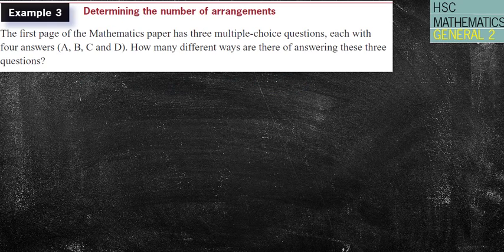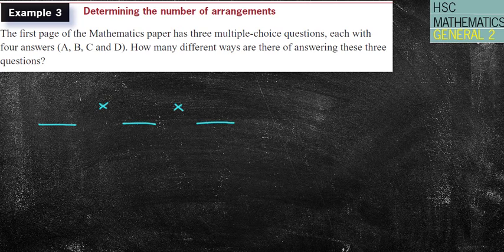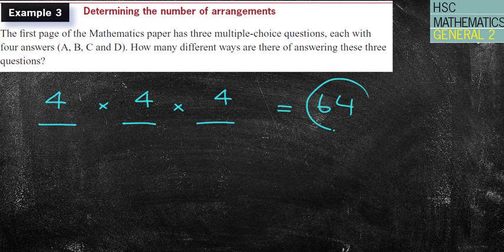Example three. The first page of a mathematics paper has three multiple-choice questions, and with each I have four answers. How many different ways are there of answering? Well, there are four options for the first question, four options for the second question, four options for the third question, which gives me basically four to the power of three, which is 64 possible combinations. If you have to write them out, that's going to be a really long time.